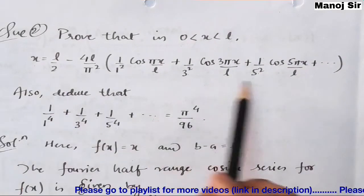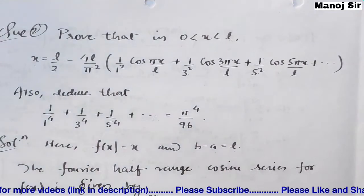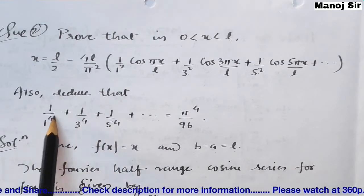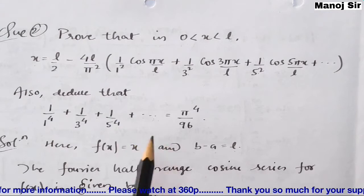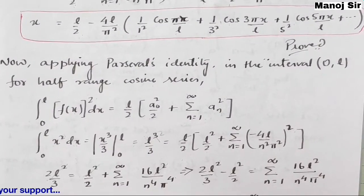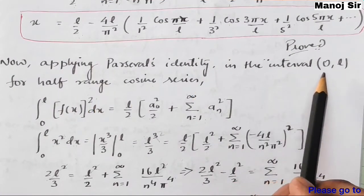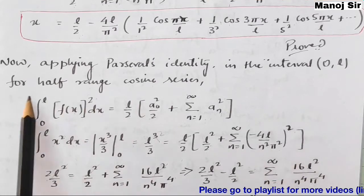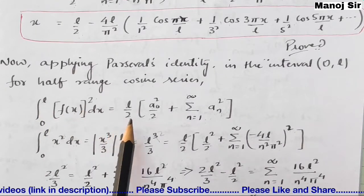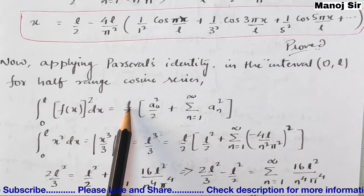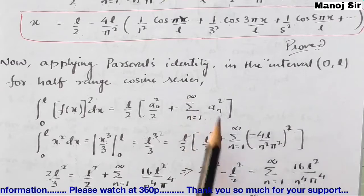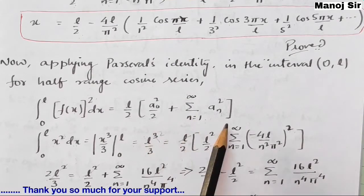Now we come to the second part. Since we need to deduce a sum involving fourth powers, we apply Parseval's identity. For the half-range cosine series on [0, l], Parseval's identity states: ∫₀ˡ [f(x)]² dx = (l/2) · [a₀²/2 + Σ(n=1 to ∞) aₙ²]. We have the values of a₀ and aₙ, so we substitute them.